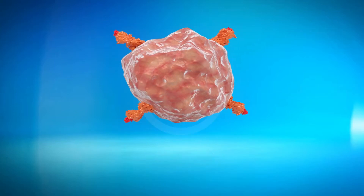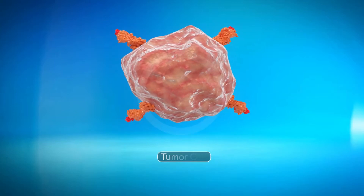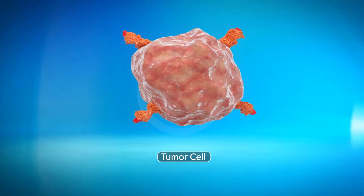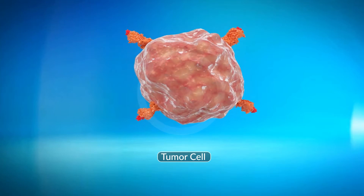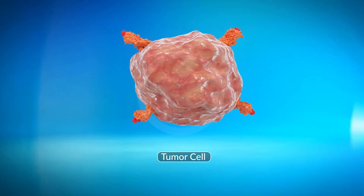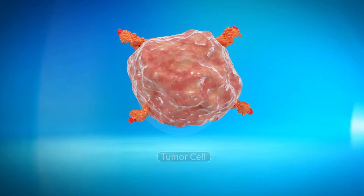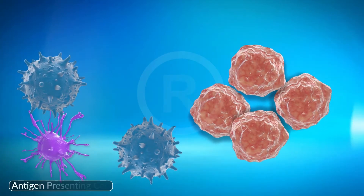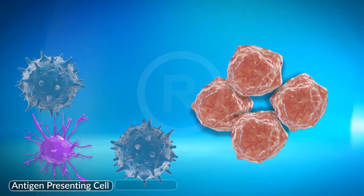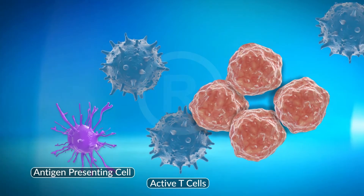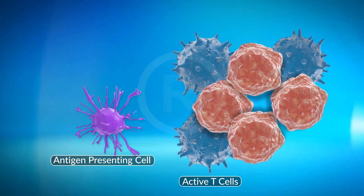In the case of tumor cells, the immune system recognizes these cells as non-self cells based on the neoantigens expressed by the tumor cells. The neoantigens trigger both the innate and adaptive immune system to attack the tumor cells.